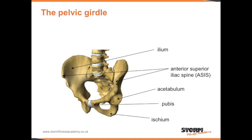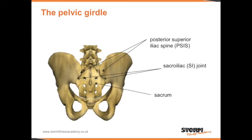The Pelvic Girdle. You can see in the diagram that the large flat surface is called the ilium. The front of the pelvis is called the anterior superior iliac spine. Further down you can see the acetabulum, followed by the pubis. Then right at the bottom, known as the sit bones, is the ischium. On the reverse of the pelvic girdle we have the posterior superior iliac spine, the sacroiliac joint, and the sacrum.